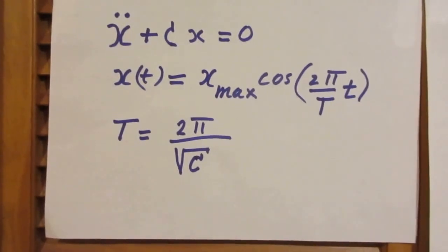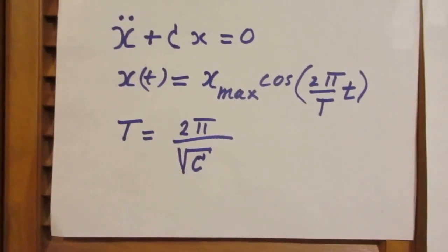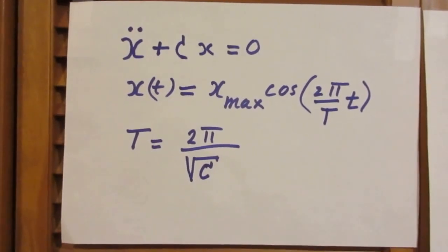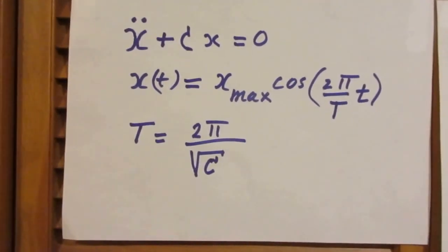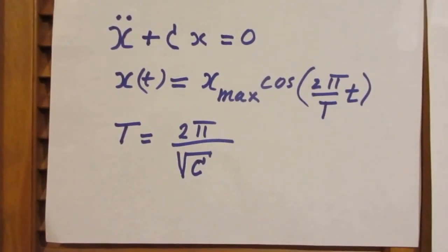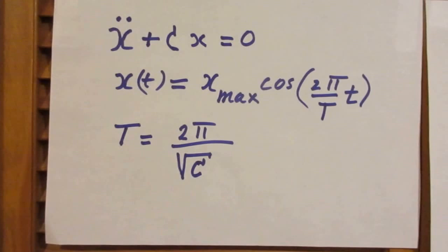When you have the second derivative of x, and I indicate it with two dots, which means d2x dt squared plus a constant times x, if that is zero, then x always varies in a sinus circle or a cosinus circle fashion. I arbitrarily chose here the cosine.